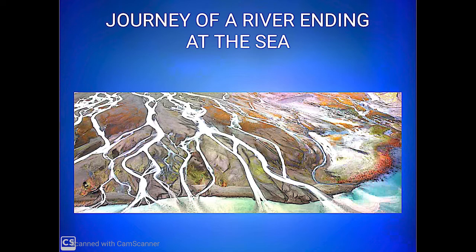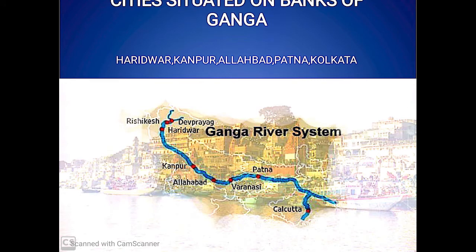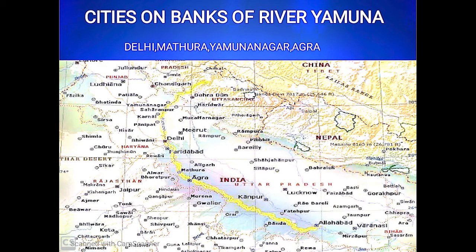As you see in the picture, the journey of a river starts from mountains and finishes in some lake or sea. Many famous cities are situated on the bank of river Ganga — these are Haridwar, Kanpur, Allahabad, Patna, and Kolkata. Similarly, our capital Delhi is situated on the bank of river Yamuna. Other cities on this bank are Agra, Mathura, and Yamunanagar.